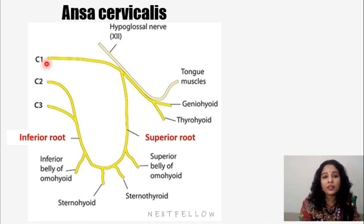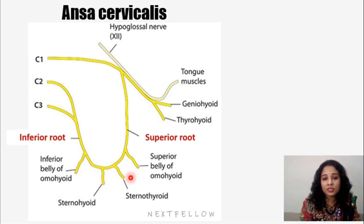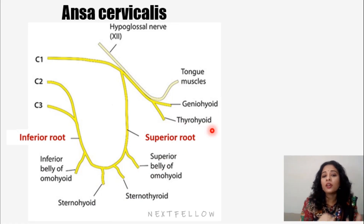Looking at a schematic image for clarity: C1 travels along the hypoglossal nerve to supply geniohyoid and thyrohyoid — so these are from C1, but the nerve runs with the hypoglossal nerve. The descending hypoglossal forms the superior root. The inferior root is formed by the descending cervicalis from C2 and C3. The ansa supplies the inferior belly of omohyoid, sternothyroid, sternohyoid, and superior belly of omohyoid. So all infrahyoid muscles except thyrohyoid are supplied by ansa cervicalis.